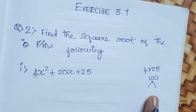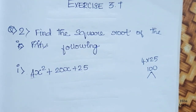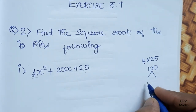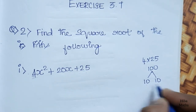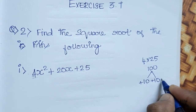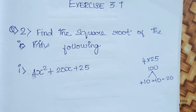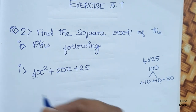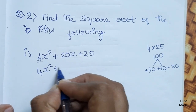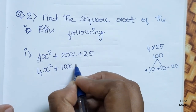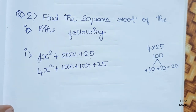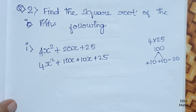The concept is: how do we split 100? 10 times 10 is 100, and 10 plus 10 is equal to 20. So we rewrite as 4x² plus 10x plus 10x plus 25.